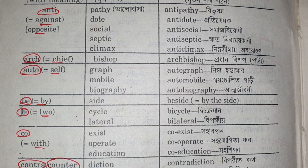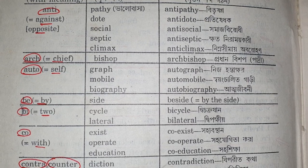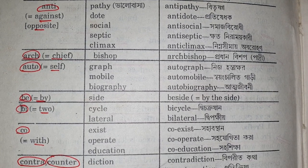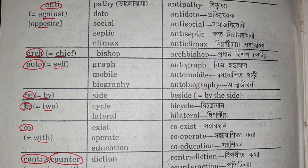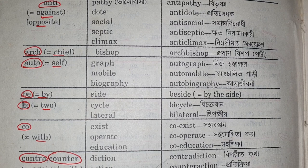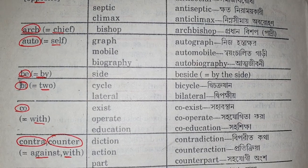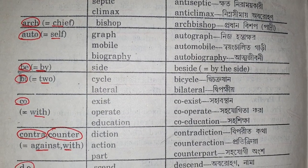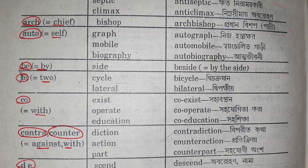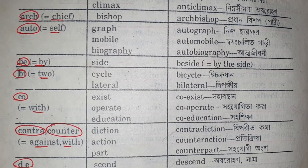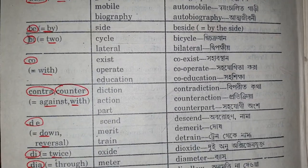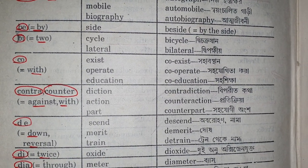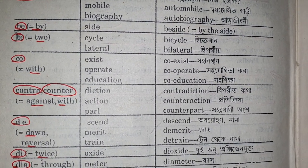Next, auto with the meaning of self — graph, autograph; mobile, automobile. Be with the meaning of by — side, beside. By with the meaning of two — cycle, bicycle.